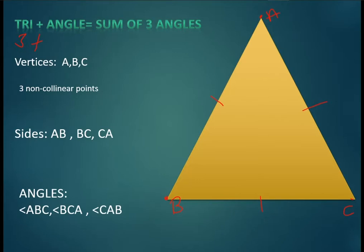Angles: by joining two rays at their endpoint, we get an angle. Look here — this is angle A, this is angle B, and this is angle ACB. A triangle has three angles.